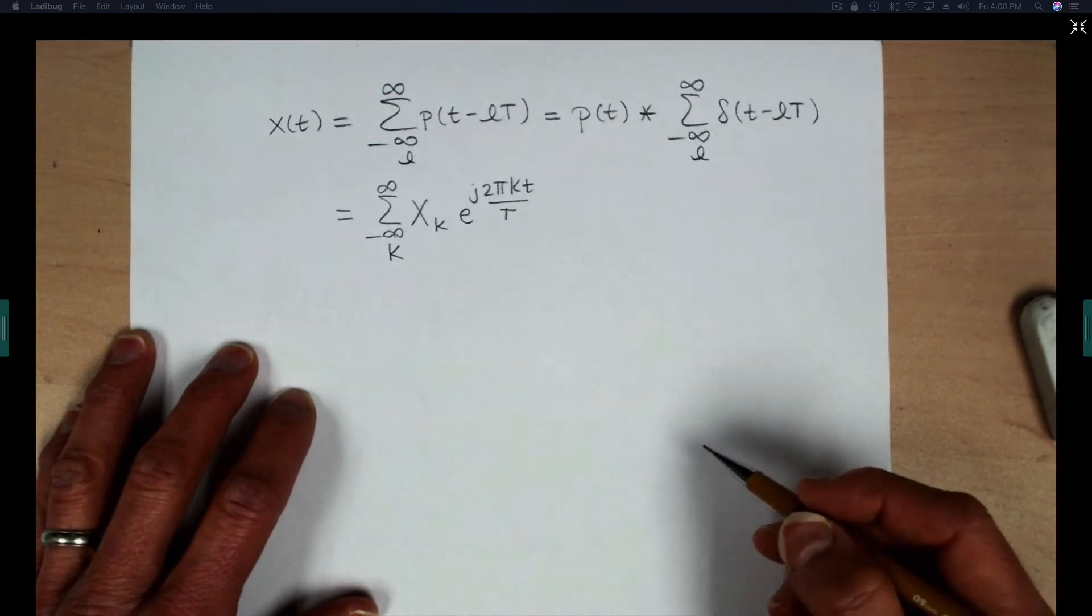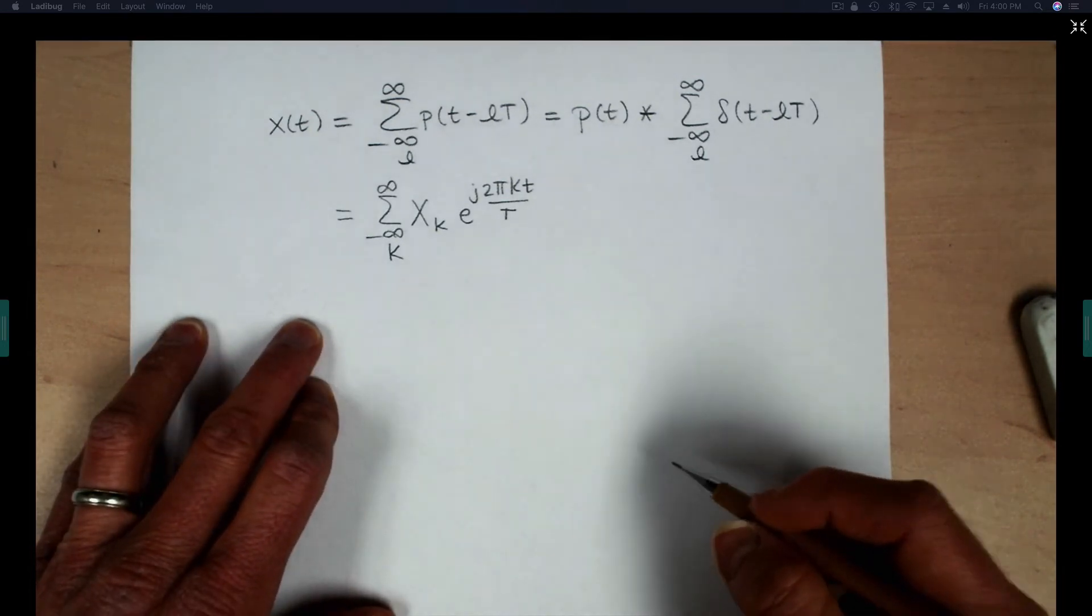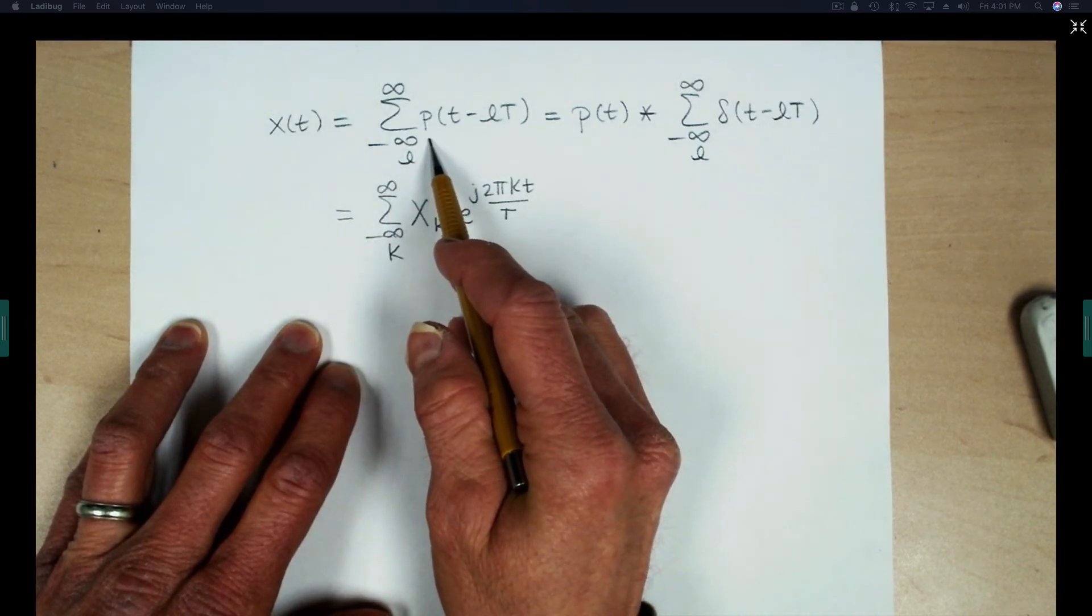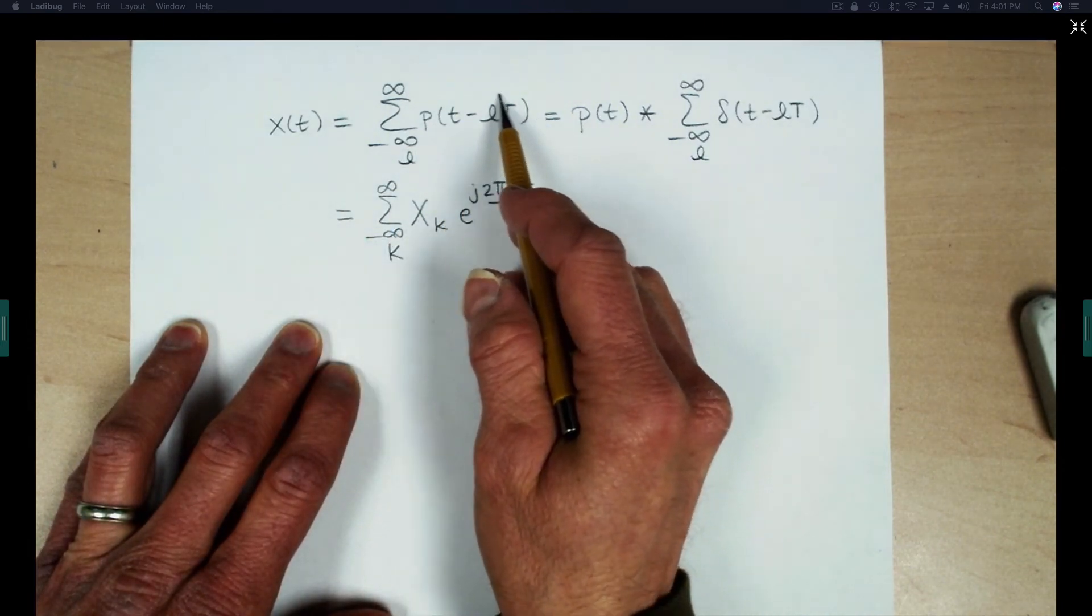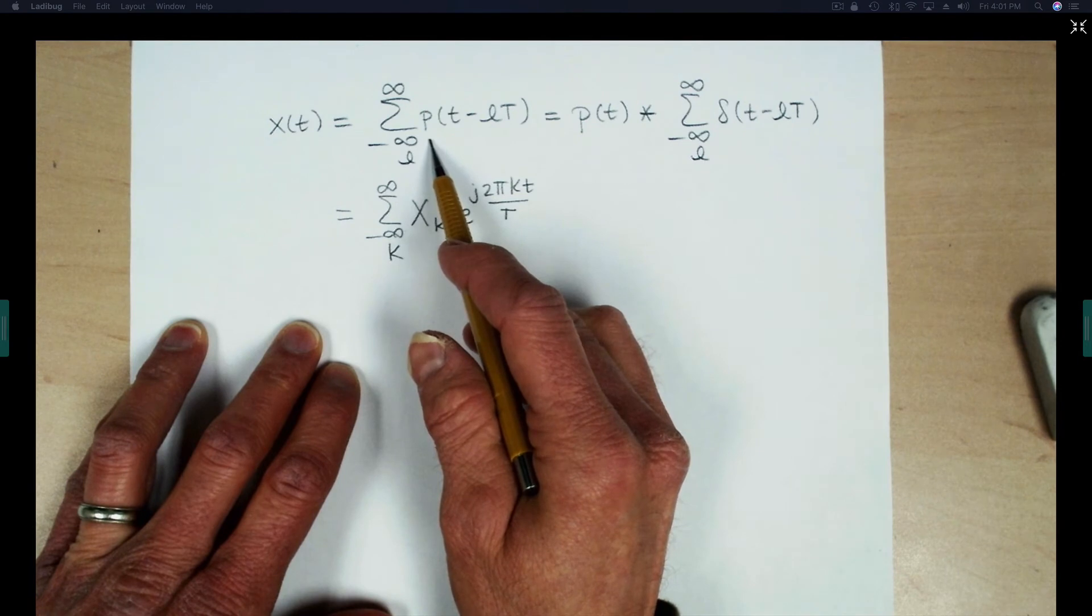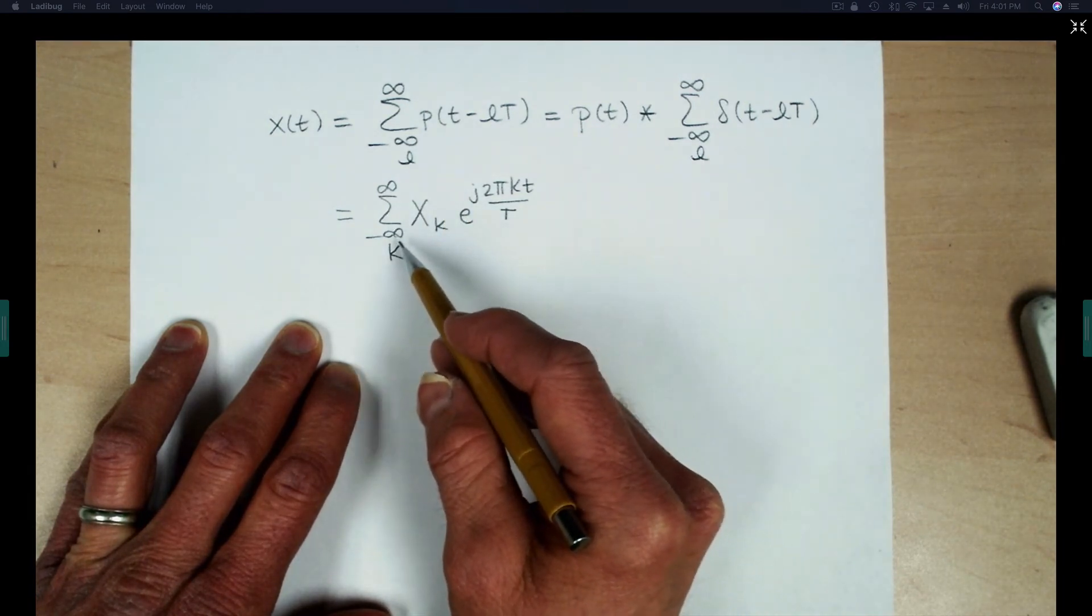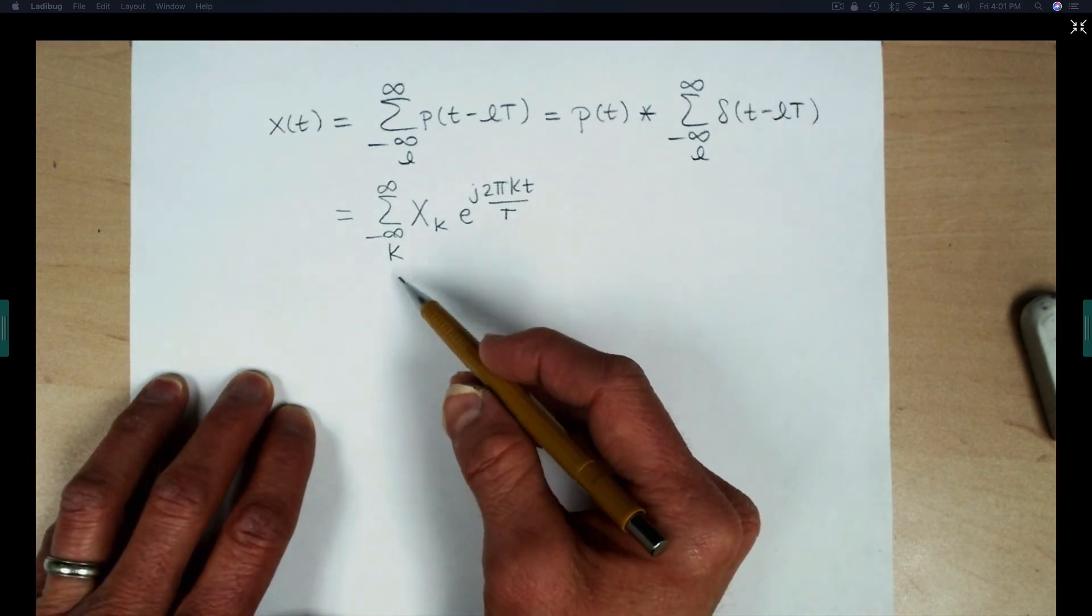To complete this example, we'll return to where we started with a periodic signal that is constructed from a train of pulses built from a basic pulse, P of T. I've written out the Fourier series representation of that periodic signal.